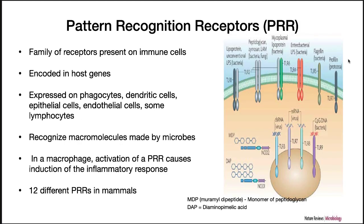The immune system uses Pattern Recognition Receptors, or PRRs — a family of receptors present on immune cells. These proteins are encoded in host genes and are expressed in phagocytes, dendritic cells, epithelial cells, endothelial cells, and some lymphocytes. They recognize macromolecules made by microbes. In a macrophage, activation of PRRs causes induction of the inflammatory response. There are 12 different PRRs in mammals, pictured here on the right.